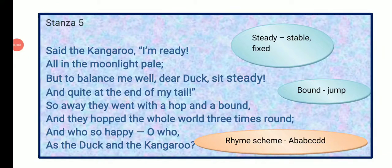Coming to stanza 5: 'Said the kangaroo, I am ready, all in the moonlight pale. But to balance me well, dear duck, sit steady and quiet at the end of my tail. So away they went with a hop and a bound, and they hopped the whole world three times round. And who so happy? Oh, who? Asked the duck and the kangaroo.' The kangaroo was satisfied with the duck's response and got ready for the ride. At night, with the pale moonlight, they started their trip. The kangaroo asked the duck to hold on firmly, and they travelled around the world three times.